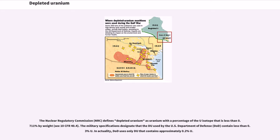The military specifications designate that the DU used by the U.S. Department of Defense (DOD) contain less than 0.3% U. In actuality, DOD uses only DU that contains approximately 0.2% U. For example, producing 1 kg of 5% enriched uranium requires 11.8 kg of natural uranium and leaves about 10.8 kg of depleted uranium having only 0.3% U-235.